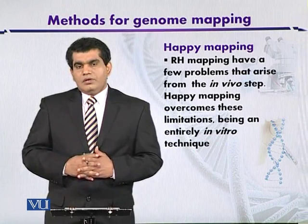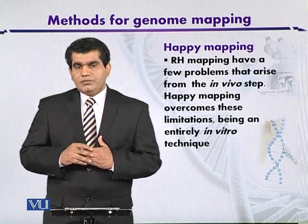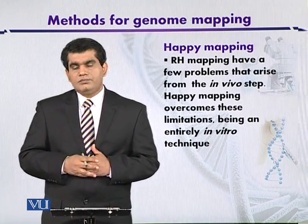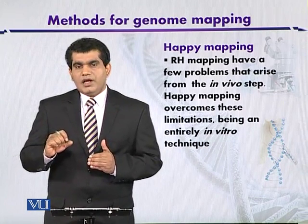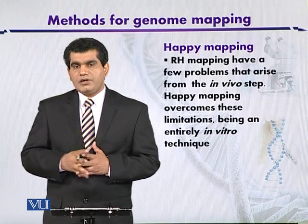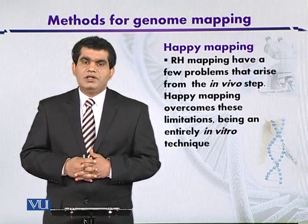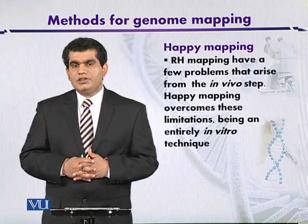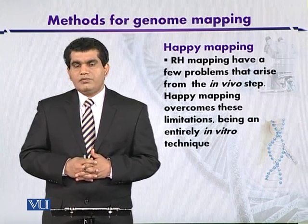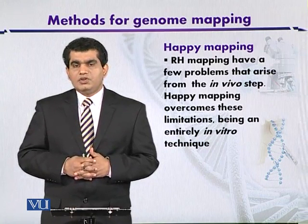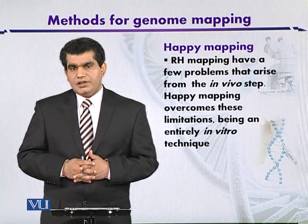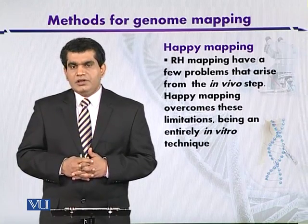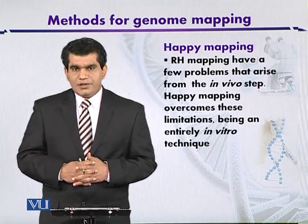With the DNA fragments prepared, specific STS (sequence-tagged site) sequences are used to amplify the fragments by PCR. The amplified products can be separated on an agarose gel and different landmarks can be identified. This is a good variation of RH mapping to map DNA, and it has removed all the limitations that were present in RH mapping.